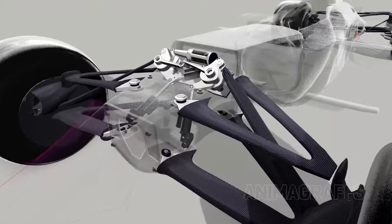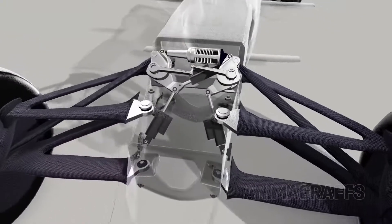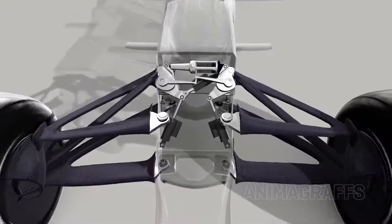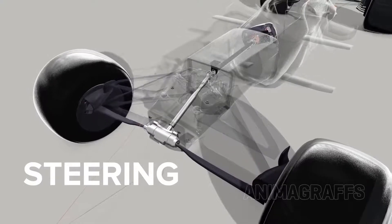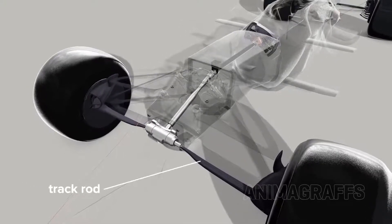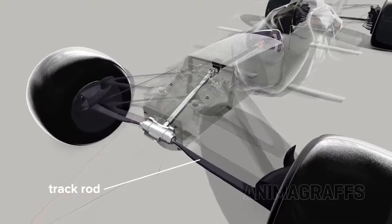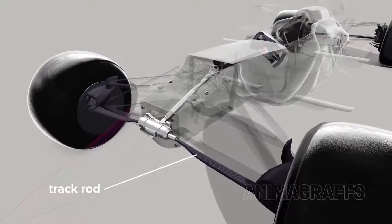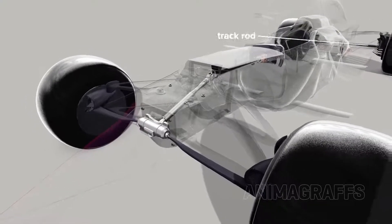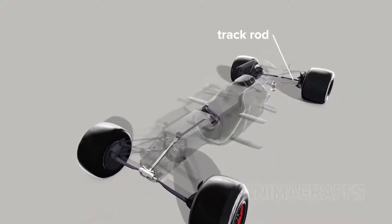The front suspension handles similar tasks to the rear, but with different techniques. The steering system is closely packaged with front suspension. A track rod links each tire to a fairly standard hydraulic rack and pinion setup, with the steering column extending into the cockpit. The rear suspension has a track rod as well for vertical tire angle adjustment.